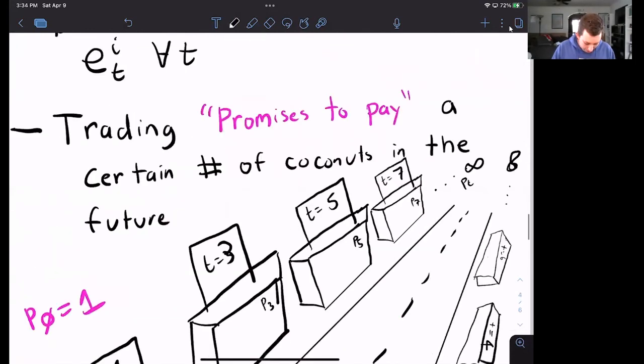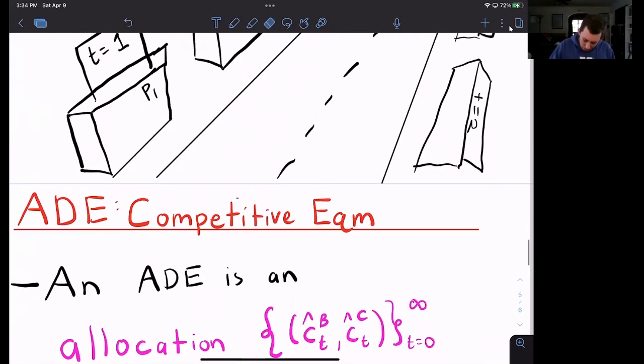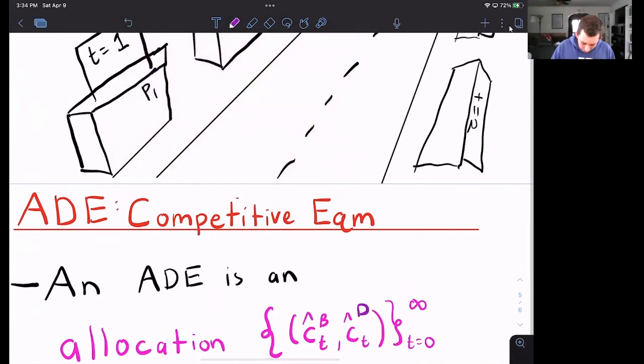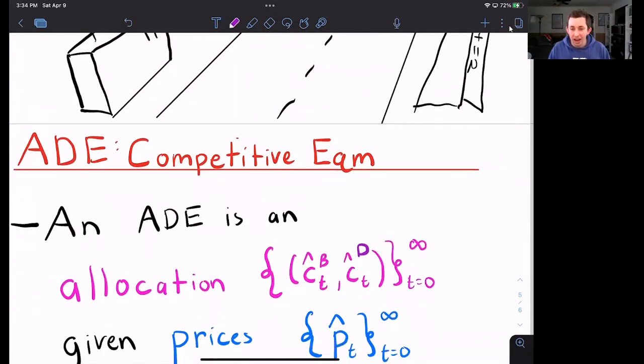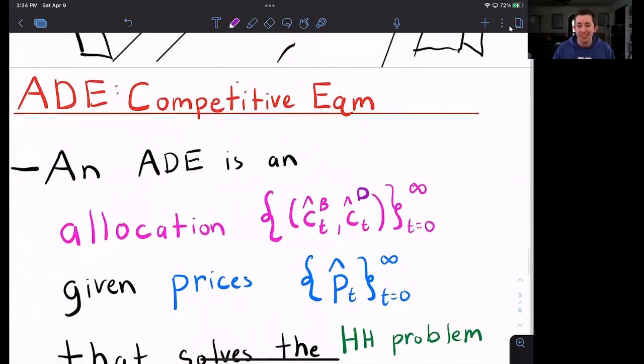So let's go ahead and do that now. What is an Arrow-Debreu competitive equilibrium? An Arrow-Debreu competitive equilibrium is an allocation. It's an allocation of the consumption for Bill and Dave for every period from T equals zero to infinity. Given prices, again, every price from T equals zero to infinity, a price for every stall in the Arrow-Debreu market.